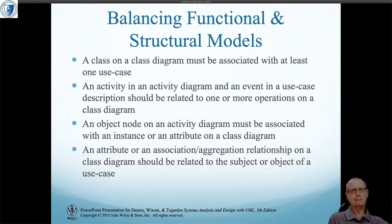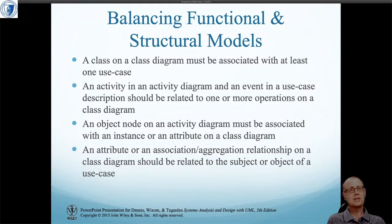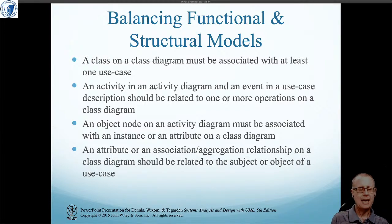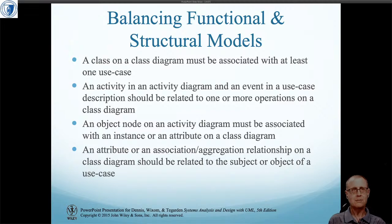Here are some rules of thumb: a class on a class diagram must be associated with at least one use case. An activity should be related to one or more operations in a class diagram. An object on an activity diagram must be associated with an instance or attribute on a class diagram. An attribute or association/aggregation relationship on a class diagram should be related to the subject or object of the use case. All the analysis classes and sequence diagrams should tell a consistent story.